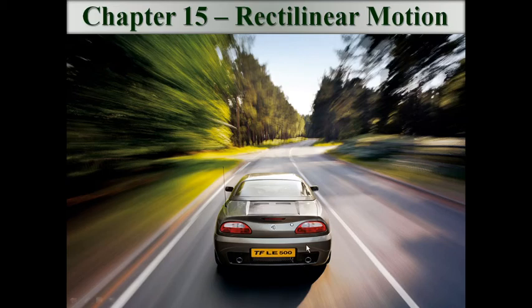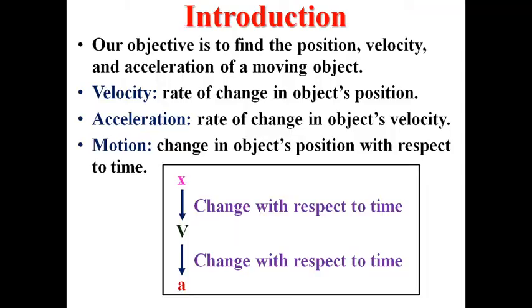Chapter 15: Rectilinear Motion. As an introduction, our objective is to find the position, velocity, and acceleration of a moving object. Velocity is the rate of change in an object's position. Acceleration is the change in an object's velocity. Three quantities: position, velocity, and acceleration. A change in position with respect to time gives velocity; a change in velocity gives acceleration.